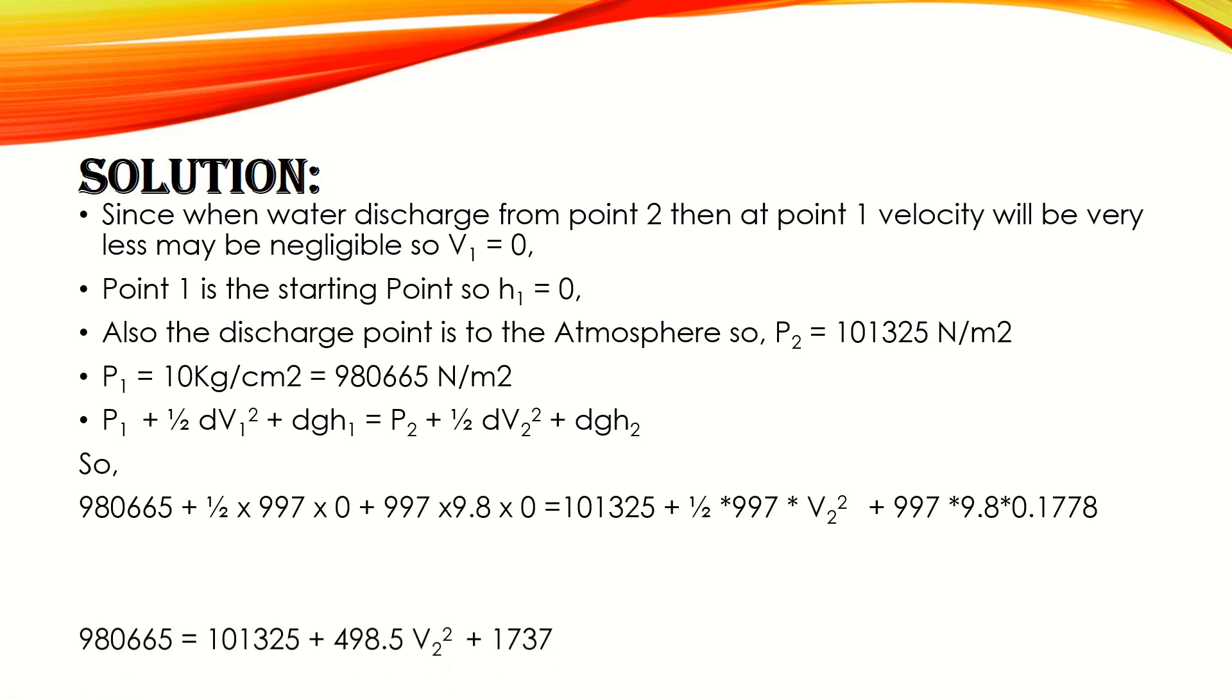Putting all the values, we get velocity squared equals 1760. Taking square root, we get 41 meters per second, which is our required value. So the water will be discharged from point two at the speed of 41 meters per second.